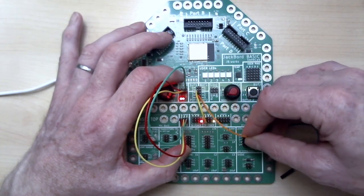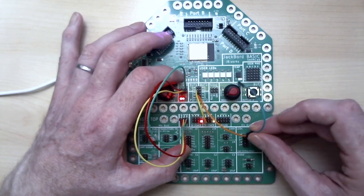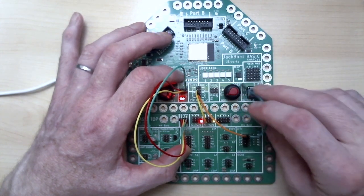And then we need our ground so we go from ground from red LED back to ground and there we have it it's quite a simple circuit.